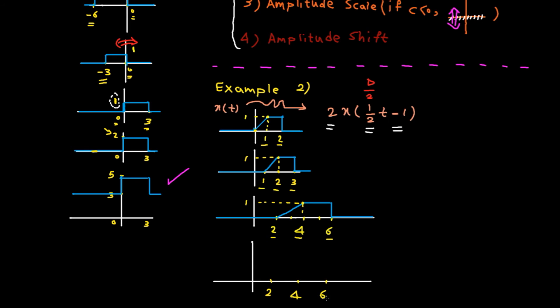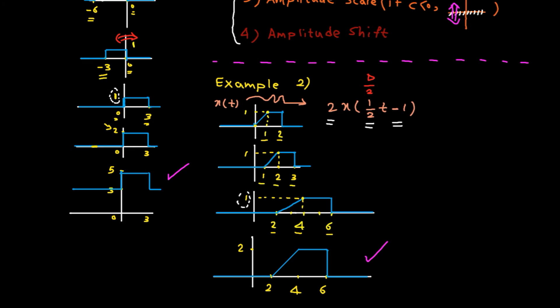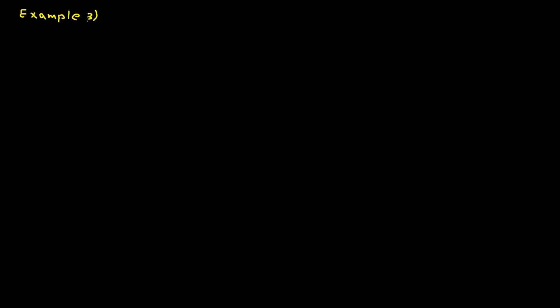Finally, apply amplitude scaling. The signal doesn't change in the time direction; all we need to do is scale up the amplitude by a factor of two. Done! Before I let you go, I want to solve one more example to make sure you completely got it.